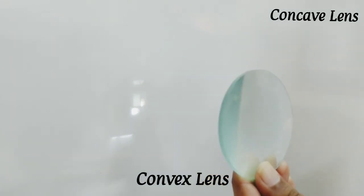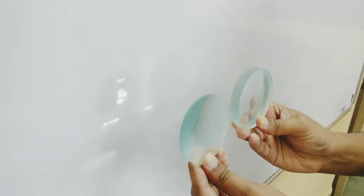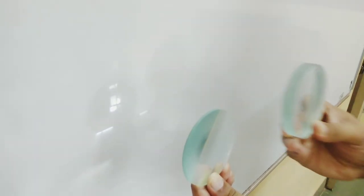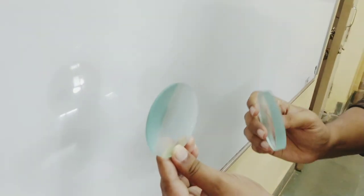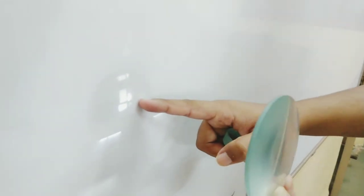Because concave lens can never produce a real image, it always produces a virtual image, so it cannot produce a real image. Hence we do not get any real image on the screen. And I am moving the concave lens but I am never getting a real image, whereas a convex lens produces a real image on the screen.